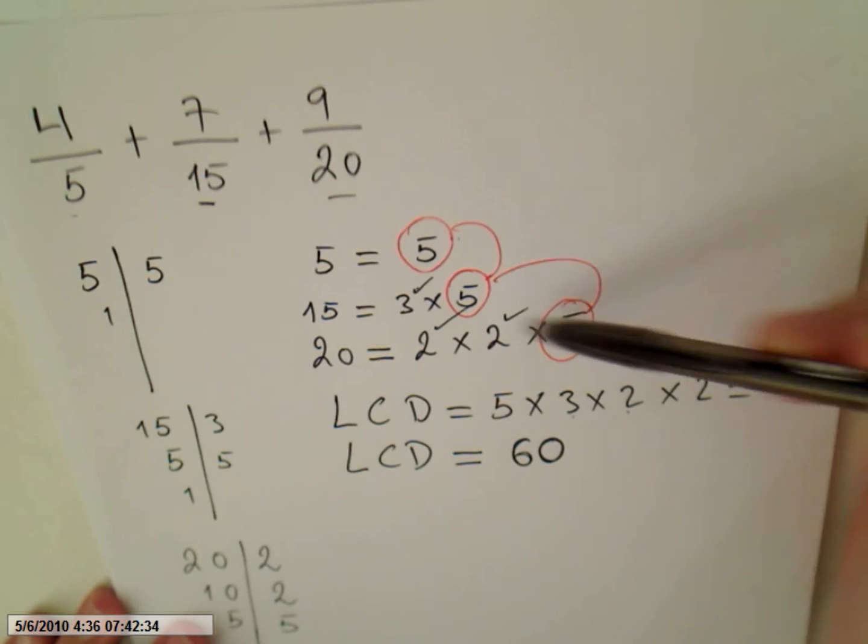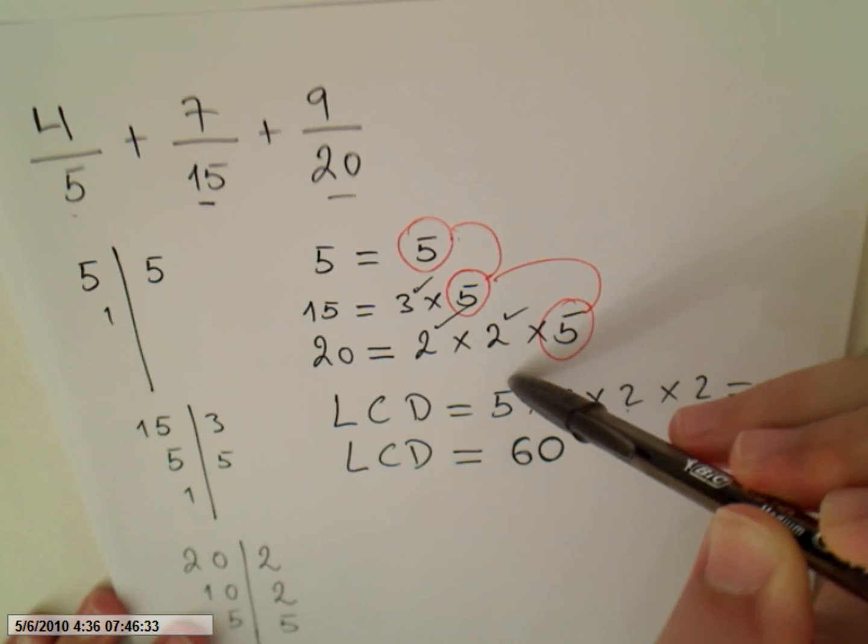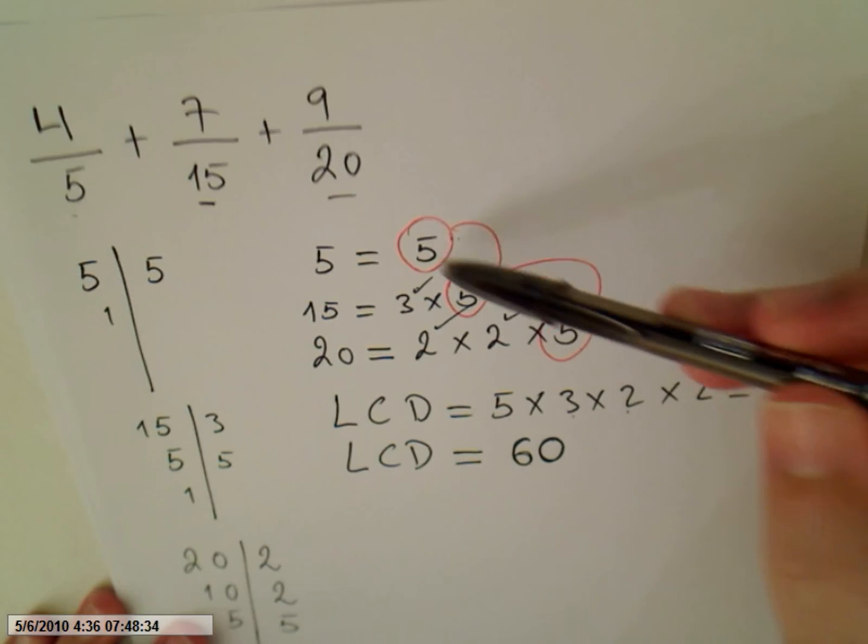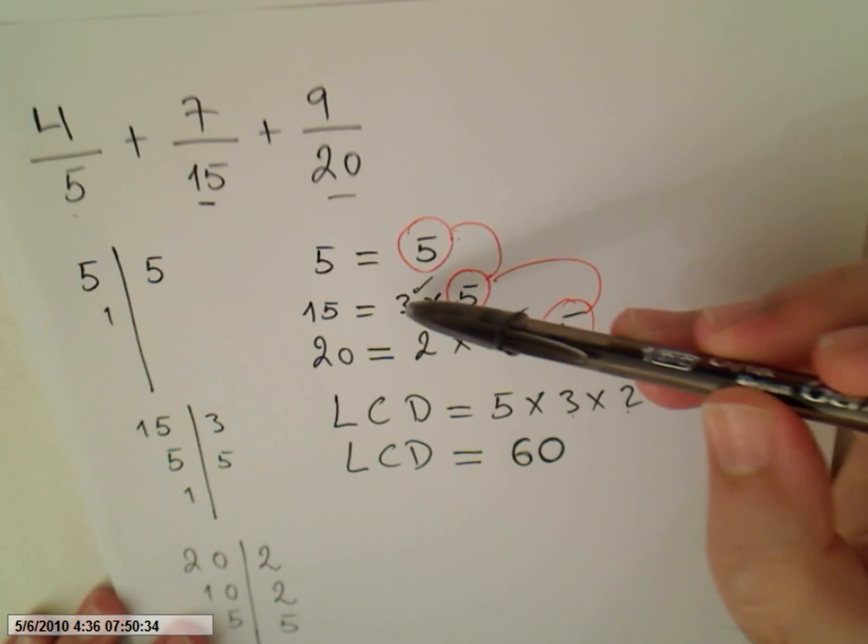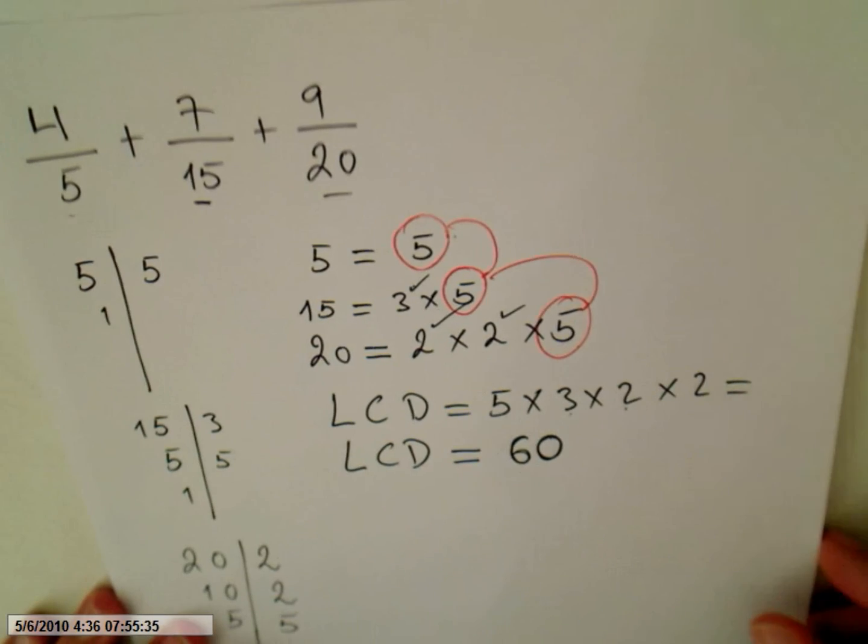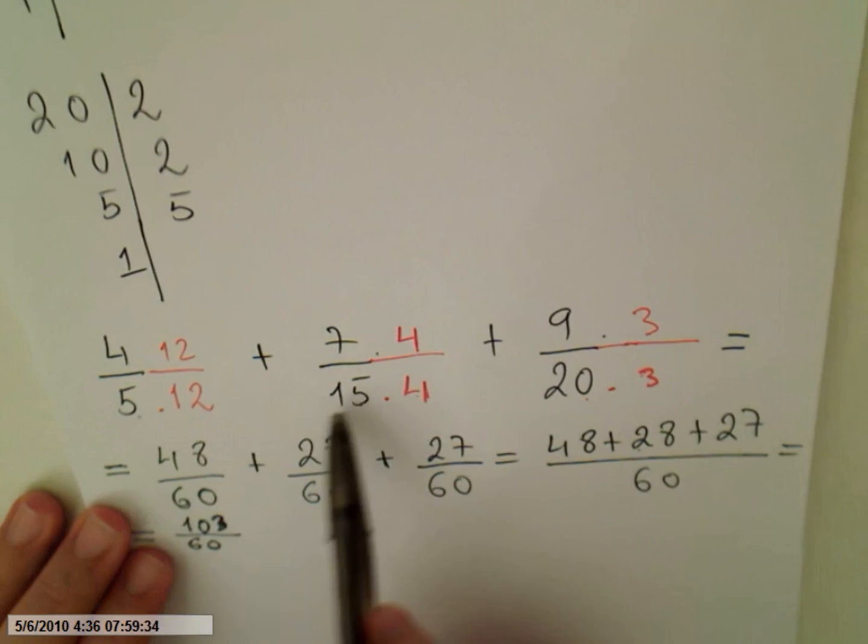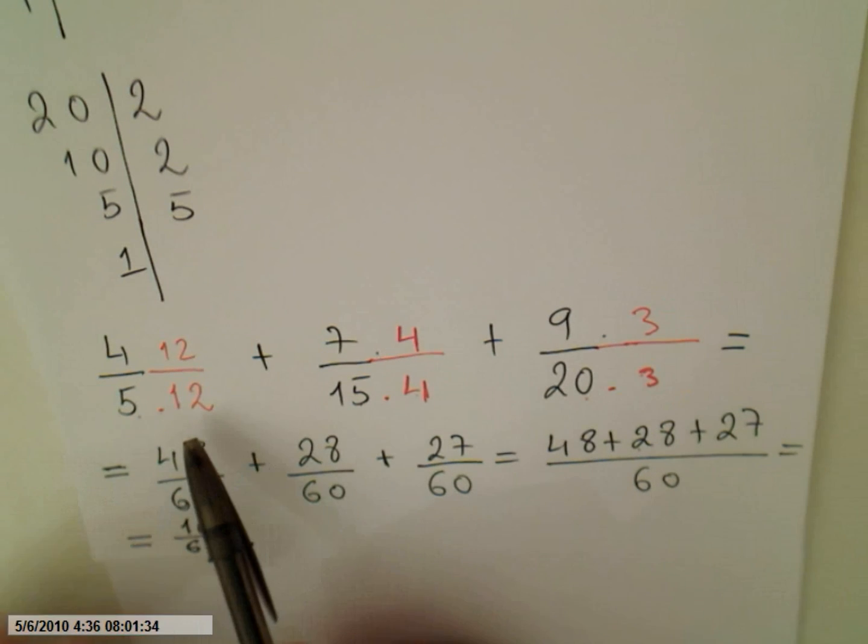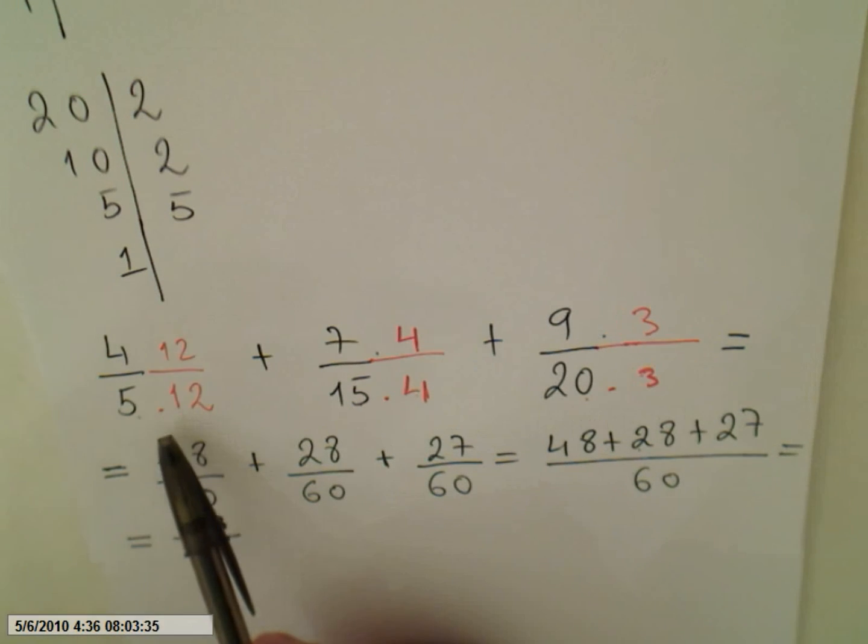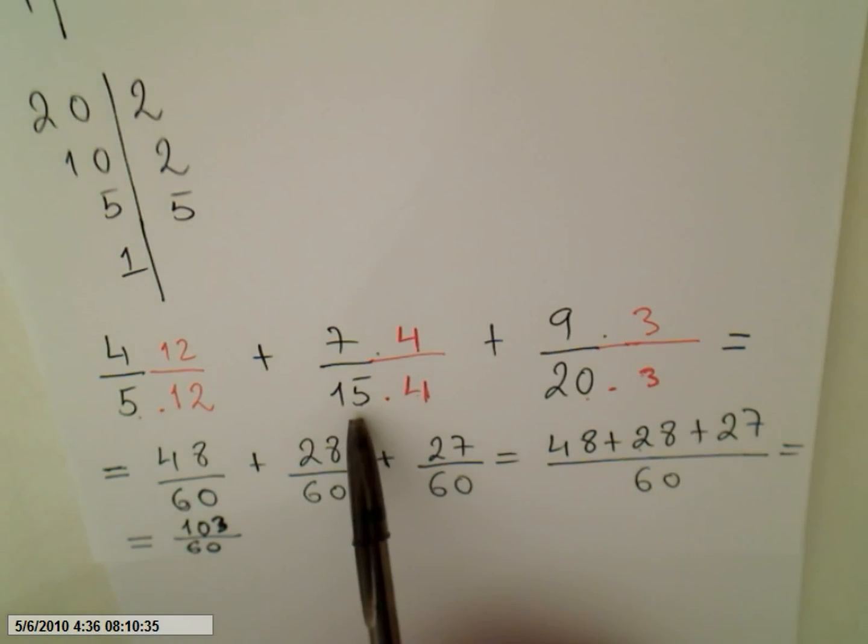Like here we use the common factor only once. So it will be a product of the common factors and the uncommon factors. So 3, 2, 2, and that will be 60. And then you have to go back to your fraction and multiply by the appropriate number to get 60 on the denominator in all the denominators. Okay, so yes.